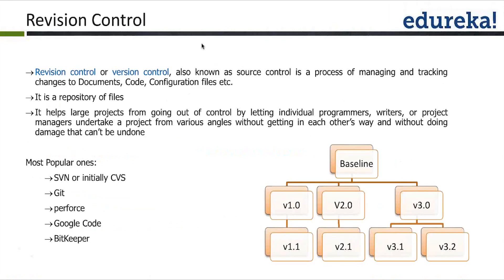Let's talk about the version control or revision control system and why it is required. Looking at the slide, there is a baseline version, and then different versions: version 1, 2, 3, and so on. Each version has subversions or revisions — version 1 has revision 1.1, version 2 has revision 2.1, version 3 has revisions 3.1 and 3.2.